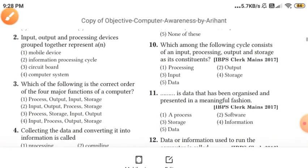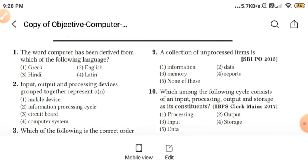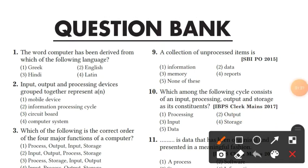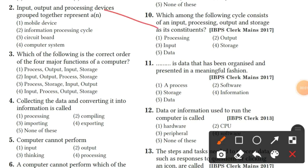Question 9: a collection of unprocessed items is called data. Option — data is the right answer.